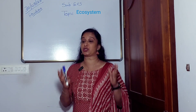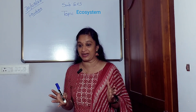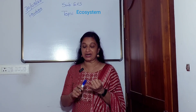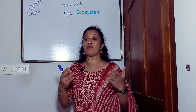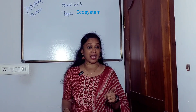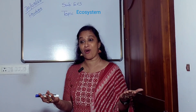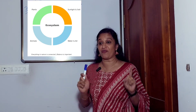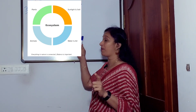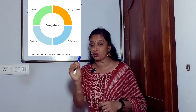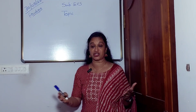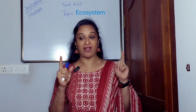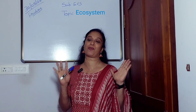If we cut too many trees, what happens to birds and animals that live on trees? Exactly — they lose their homes. So when one part is too much or too little, the whole of nature gets affected. That is why we say balance is very, very important.